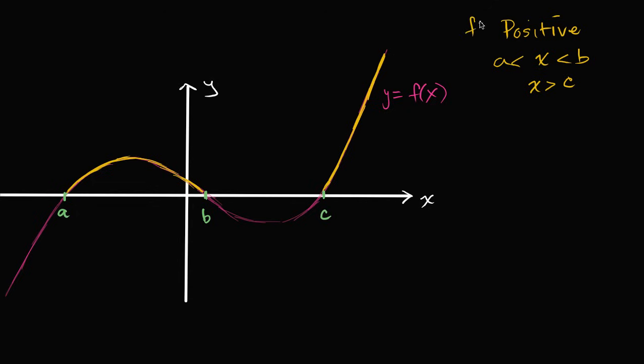These are the intervals when our function is positive. f of x is positive when x is in this interval, or this interval, or that interval.